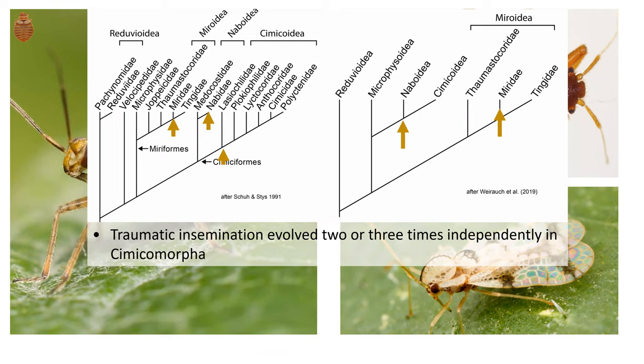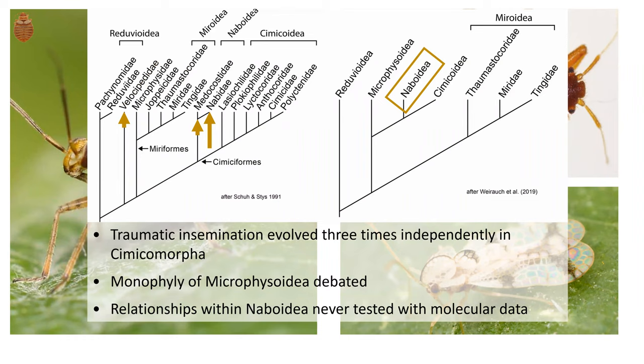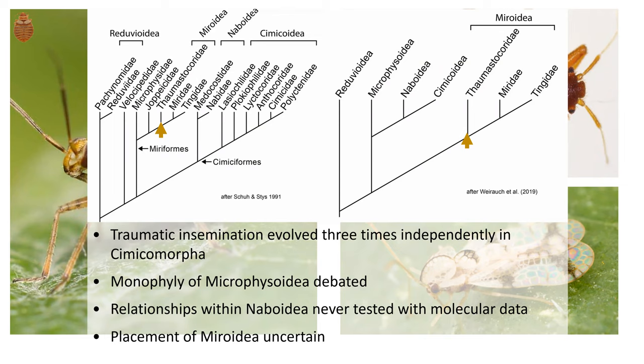We have the unanswered question of whether traumatic insemination evolved two or three times independently within Cimicomorpha. Monophyly of the superfamily Microphysoidea is also debated. Relationships within Naboidea have never been tested using molecular data. And placement of Miroidea and relationships within are also uncertain, despite the clear importance of this group.